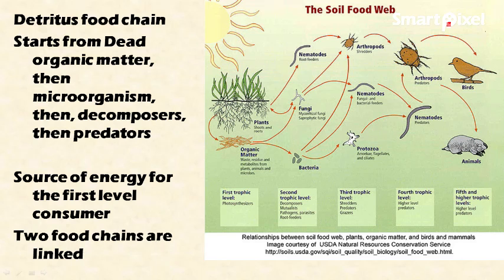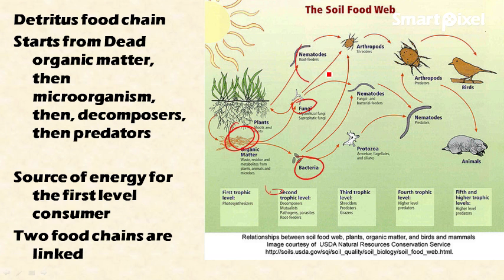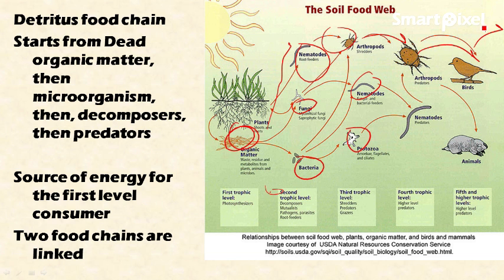The second type is the detritus food chain. It starts from dead organic matter, whereas the grazing food chain starts from living plants. This dead organic matter is fed on by fungi, bacteria, nematodes, and other microorganisms. These microorganisms are in turn fed on by arthropods, larger nematodes, and protozoans. The chain continues — these are eaten by birds, and birds are eaten by other consumers. Fungi, bacteria, and nematodes are called saprophytes because they decay and decompose organic matter.